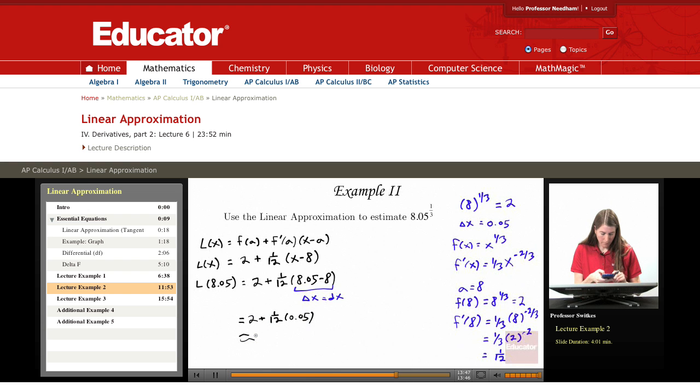We have 0.05 divided by 12 plus 2 equals about 2.00416 repeating. And that's actually an exact result for L of 8.05, and that's my estimate for the cubed root of 8.05, 8.05 to the 1 third.